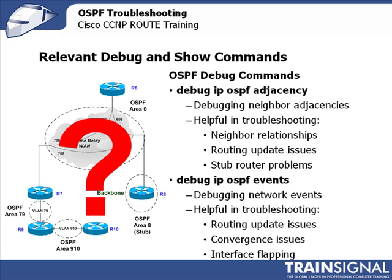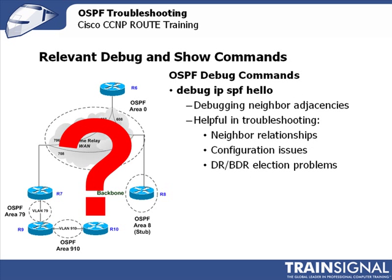The debug IP OSPF events command helps you debug network events. It'll show you the different things that are going on with the network from an OSPF standpoint, and can help you with routing update issues, convergence issues, and interface flapping. The debug IP OSPF hello command helps you debug neighbor adjacencies by showing how often hellos are happening. This can help with troubleshooting neighbor relationships, configuration issues, and DR and BDR election issues.